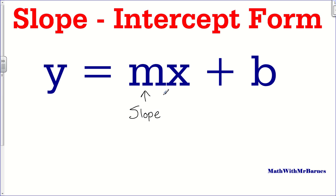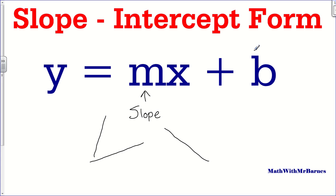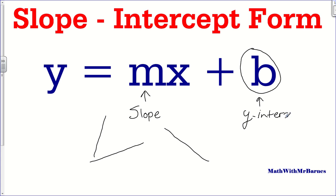The slope is essentially a description of the steepness of a line — what kind of slant is on it. A high number would be really, really slanted, and a low number would be less slant. If it's negative, negative slopes would look like this — going down as you move to the right. And B, the reason why they call it slope-intercept form is because M is the slope and B is the Y-intercept.